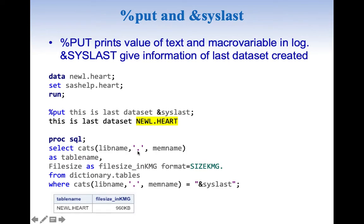Now if we want to know the file size of the last dataset created, all we need to do is use where cats(libname, '.', memname) equals &syslast. Here we can see our result. It gives us the file size of 960 KB for newl.heart which is the last dataset created.